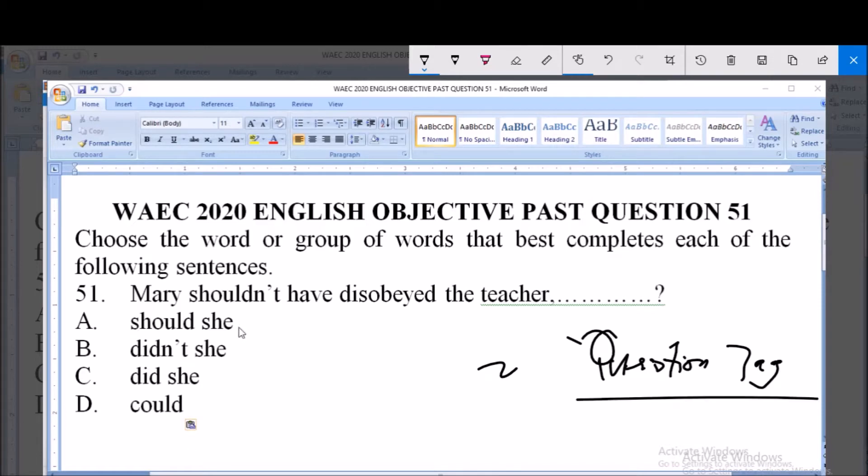Option A says should she? Option B, didn't she? Option C, did she? And option D, could she?